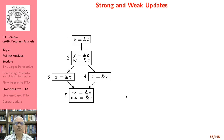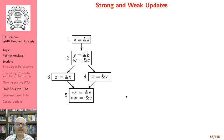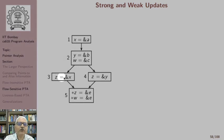There is an important concept in flow-sensitive points-to analysis related to why we get more precise information, and this concept is related to update. An update of a pointer variable can be divided into two categories: strong and weak update. Whenever we make an assignment to a pointer we are updating the pointee list. A weak update merely adds a pointee to the set, while a strong update removes the previous pointees and then adds the new pointee. When there is no pointer indirection, this update is always a strong update.